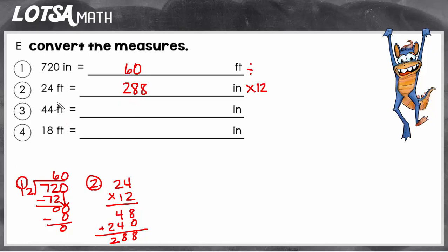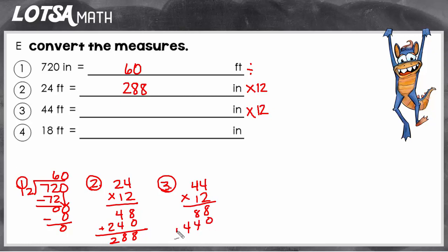Let's do one more together. We're going from feet to inches, so we're going from larger to smaller, horse to fly — multiply. We're going to multiply by 12 because there are 12 inches in one foot. So for number three, we have 44 times 12, and 44 feet equal 528 inches. Now you try some on your own, and if you need help, you can come back and rewatch the video. Good luck.